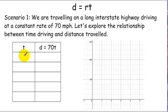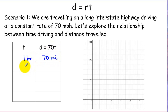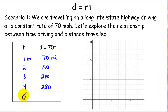So if we travel for 1 hour, we would have traveled 70 times 1, or 70 miles. Time is in hours, rate was in miles per hour, so distance is in miles. If we travel 2 hours, we would go 140 miles. 3 hours, 210. 4 hours, 280. And if we travel no time, we would cover no distance.